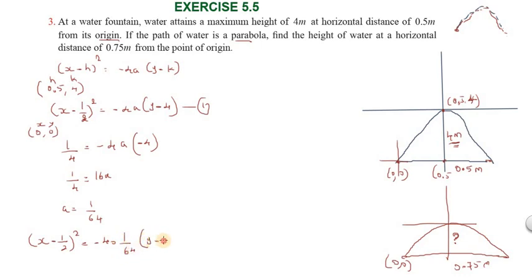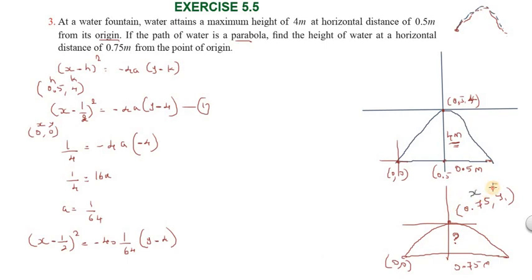Now the question asks for the height at a horizontal distance of 0.75 meters. So we need to find y when x = 0.75, which is 3/4. We substitute x = 3/4 into the equation to find y1.